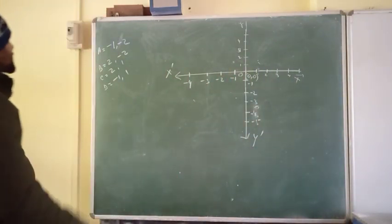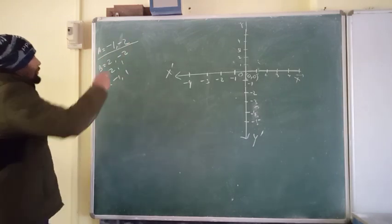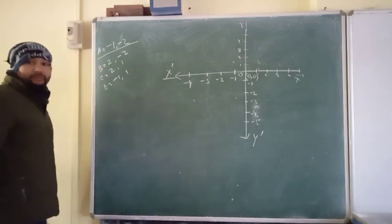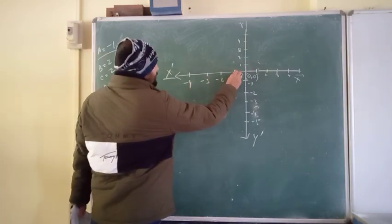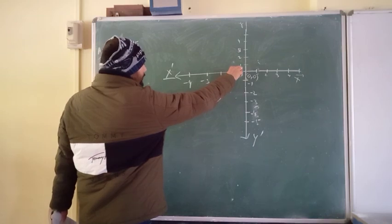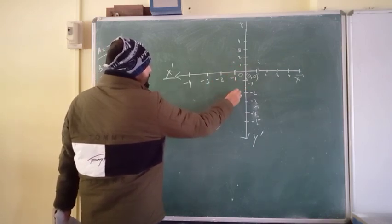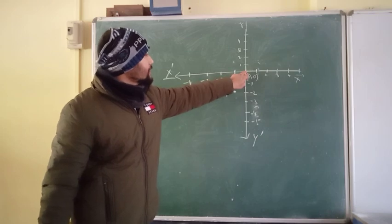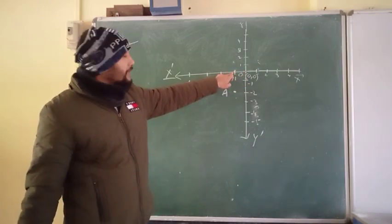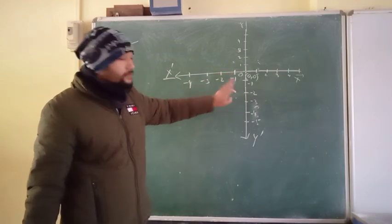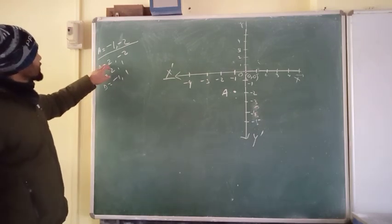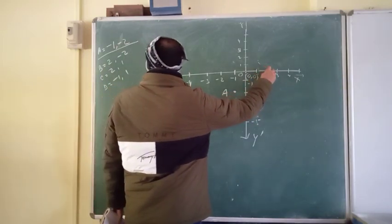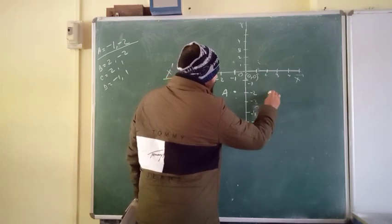First point A: x is minus 1, so we move left on the x-axis to minus 1. Y is minus 2, so we move down to minus 2. That gives us point A. Point B: x is positive 2, so we move right to 2, and y is negative 2, so we move down. That gives us point B.